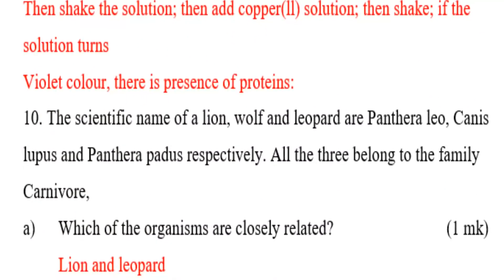The scientific names of a lion, wolf, and leopard are Panthera leo, Canis lupus, and Panthera pardus respectively. All three belong to the family Carnivora. Which organisms are most closely related? The lion and leopard are most closely related, as they share the same genus, Panthera.